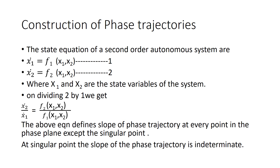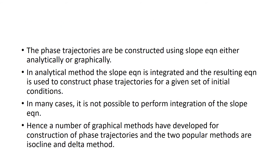To construct phase trajectories, you start with the state equations of the second order system — x1̇ and x2̇. You find the slope by dividing x2̇ by x1̇, and find the singular point by equating both to zero. There are two ways of determining phase trajectories: graphical method and analytical method. Analytically, the slope equation is integrated, and the resulting equation is used to construct phase trajectories from a set of initial conditions. Graphically, we have two methods: the isocline method and the delta method.